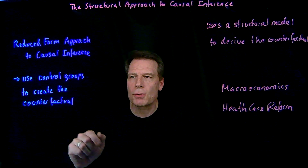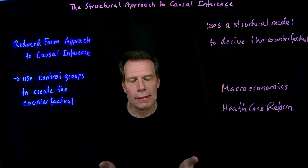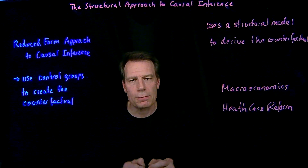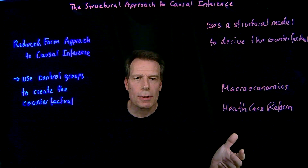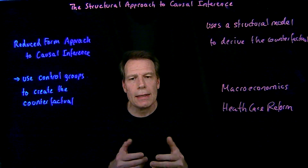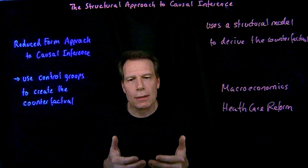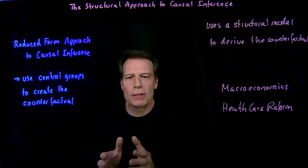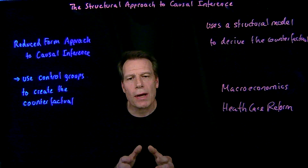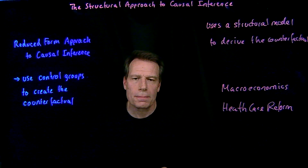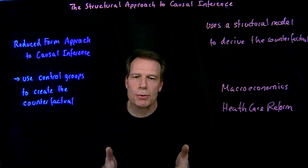That's the underlying logic of the structural approach: we use a model to construct the counterfactual, just as in the reduced form approach we use control groups to construct the counterfactual. There's a place for each approach depending on what we're trying to analyze, and oftentimes the two are used together — evidence from reduced form approaches often informs how we construct structural models. In the reduced form approach, the key question is whether there are confounders that haven't been taken into account. In the structural approach, the key question is whether the structural model is rich enough to create a believable counterfactual for causal inference.